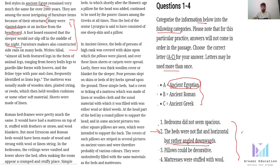I continue reading with the same keyword — ancient Egypt — because answers might repeat. The mattresses were usually made of wooden slats, planted string and reed, which then held woolen cushions or some other soft material. In this case, they are talking about woolen cushions, not that mattresses were stuffed with wool. So that question cannot be answered here. I finish reading with ancient Egypt and move to my next keyword: ancient Roman.